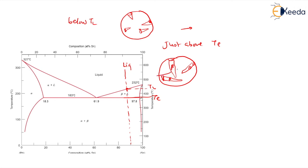As soon as we go below Te, everything becomes alpha and beta in a lamellar fashion — a layer-by-layer structure. So alpha and beta are both present below Te.